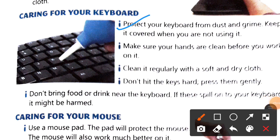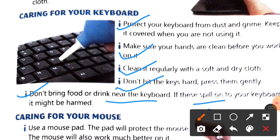For the keyboard: protect your keyboard from dust. Keep it covered when you are not using it so that dust settles on the cloth rather than on the keyboard. Before using the keyboard, make sure your hands are washed and clean. Always wipe it with a clean, dry cloth. Never bang on the keys like a piano or tabla — you have to very gently press the keys with your fingers. Don't bring food or drink near the keyboard because if it spills, the keyboard can get damaged.